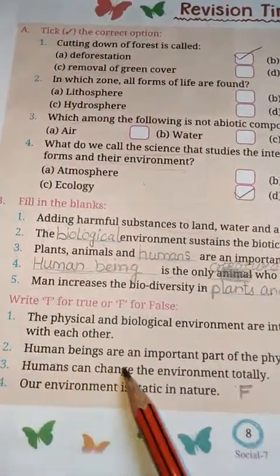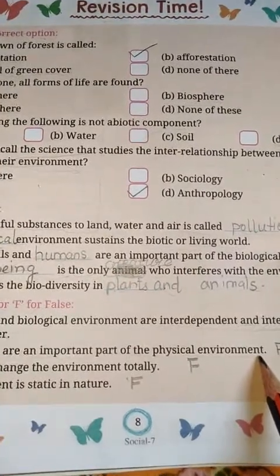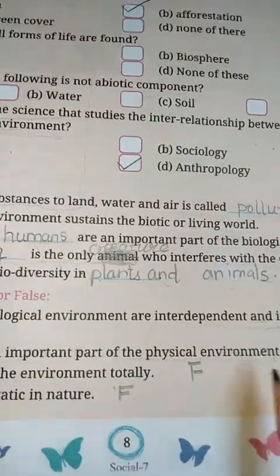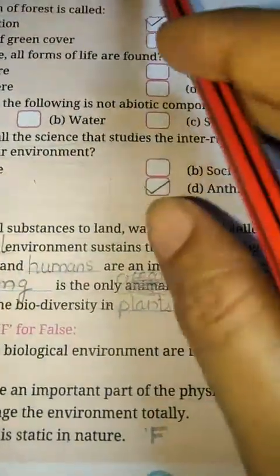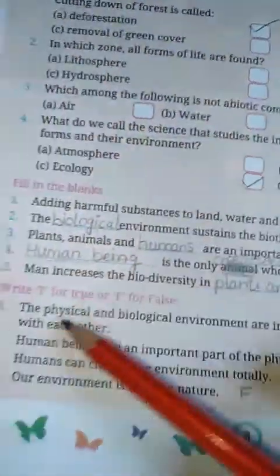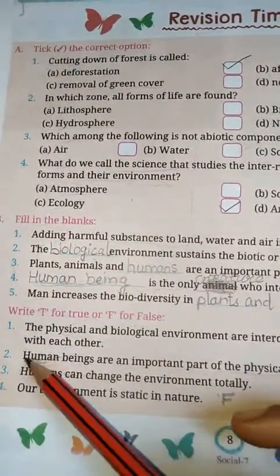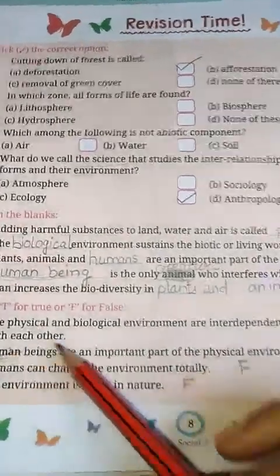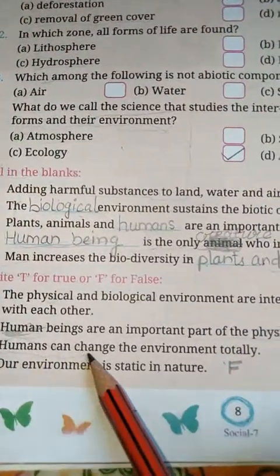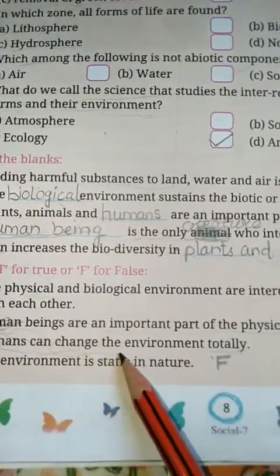Number two: human beings are an important part of the physical environment. What is physical environment? Physical environment means an abiotic environment including air, water, soil, rocks, temperature, etc. But humans are a biotic factor, so this statement is false.